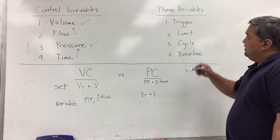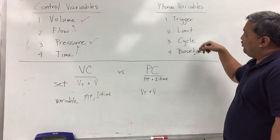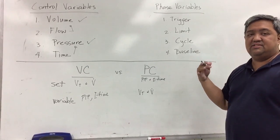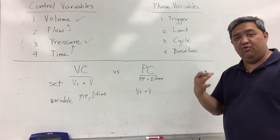Next is the phase variable. The phase variable basically has four components. Basically, this is the phase variable of a breath, of one breath.